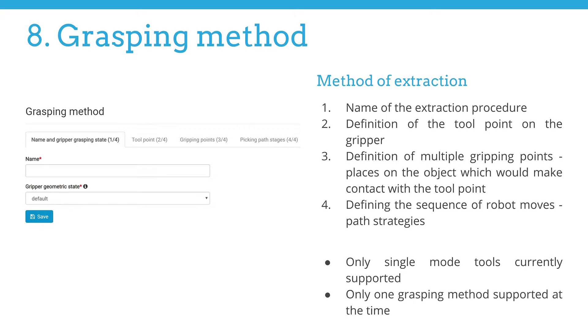On entering the initial page of grasping method configuration, a name for the extraction procedure must be recorded. In the following tabs, there is firstly a form for the definition of the tool point on the gripper. Next, the definition of one or multiple gripping points. These represent the places on the object which would make contact with the tool point. And finally, the definition of the sequence of robot moves or path stages.